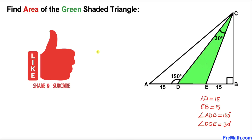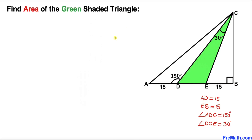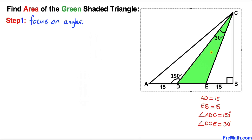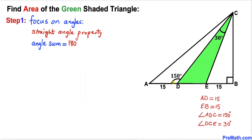Please don't forget to give a thumbs up and subscribe. Let's get started with the solution. Let's focus on the straight angle at point D — according to the straight angle property, the angle sum is 180 degrees. Since angle ADC is 150 degrees, the remaining angle CDE must be 30 degrees.